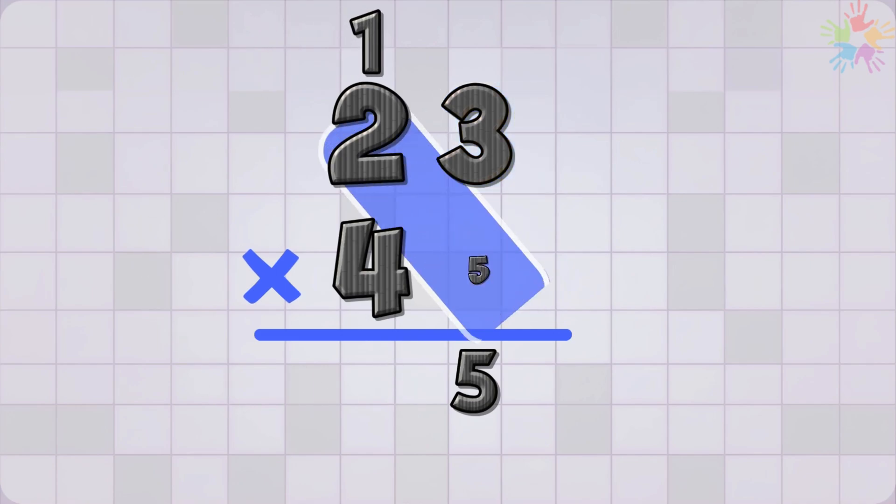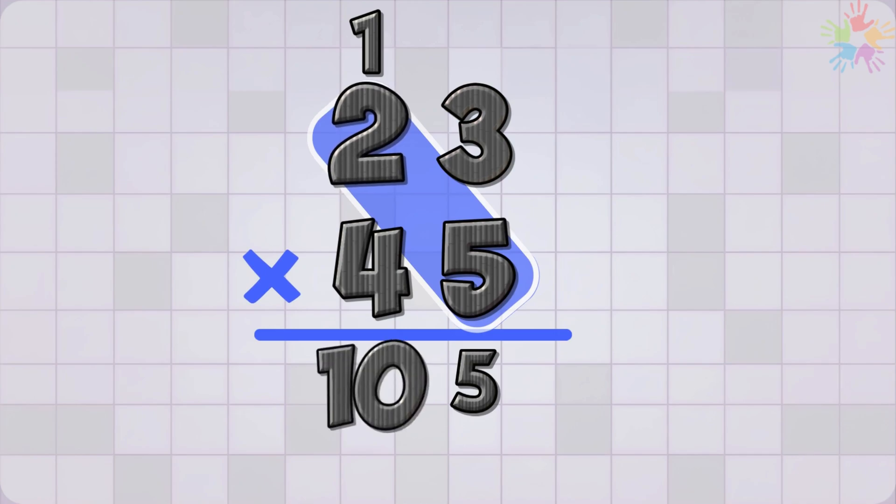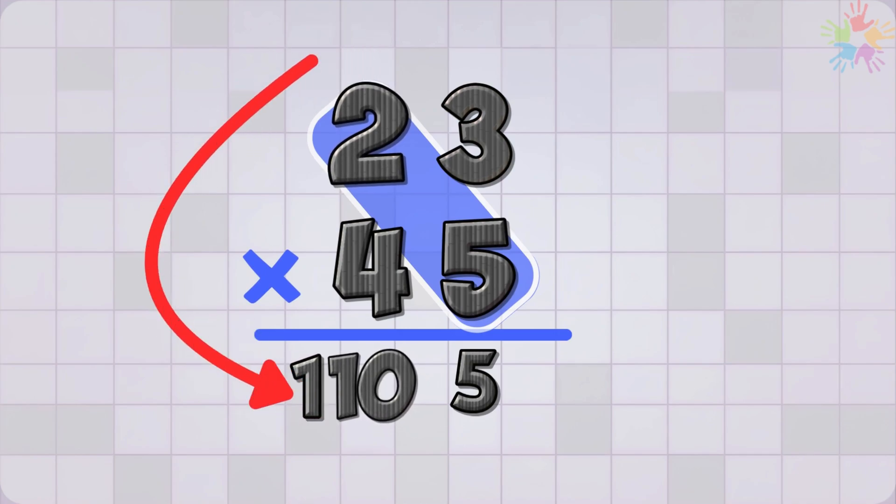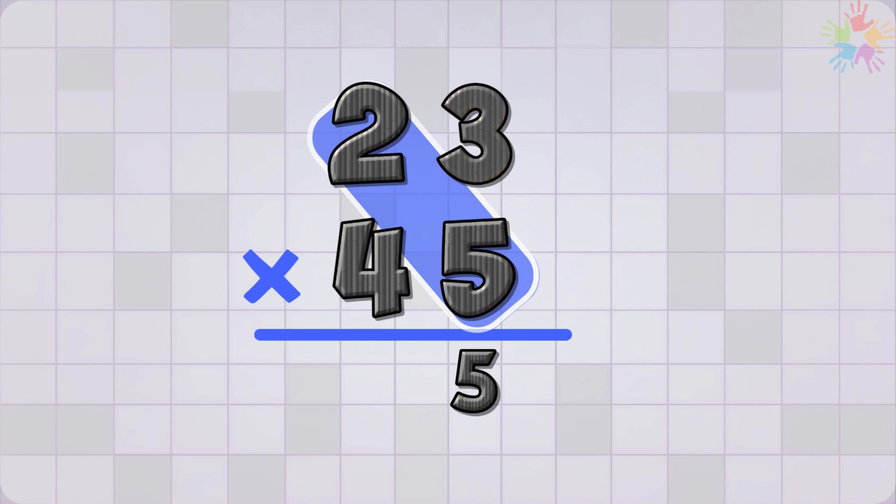Now we continue. 5 times 2 equals 10. Add the 1 we just carried that gives us 11. Now, do we have to carry 1 again? No, because there's no digit before the 2. So, our first row gives us 115.